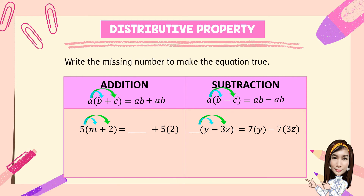Let's try this one. Write the missing number to make the equation true. Using distributive property, for addition: 5 times the quantity (M plus 2) is equal to blank plus 5 times 2. The answer is 5 times M, which simplifies to 5M, and 5 times 2 is 10. That is the final answer. For subtraction: blank times the quantity (Y minus 3Z) is equal to 7 times Y minus 7 times the quantity 3Z. The answer is 7. Simplifying: 7 times Y is 7Y, and negative 7 times 3Z is negative 21Z. That is the final answer.